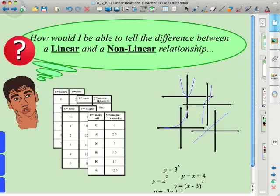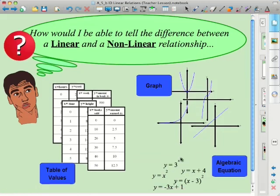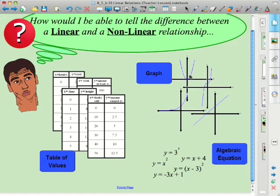And once I've guided them to that, I will take them here and tell them formally, if they haven't already come up with the words, that yes, there's three different ways of representing relationships: either via graph, via table of values, or through an algebraic equation.